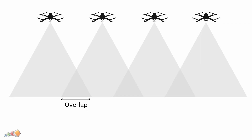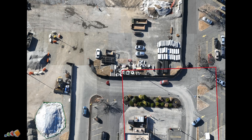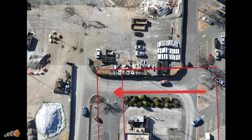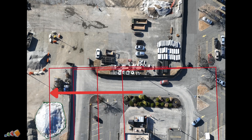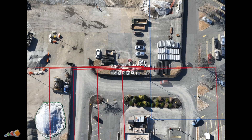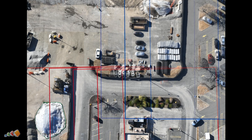First, what are overlaps? Overlaps refer to the percentage of overlap between consecutive photos your drone captures while mapping. There are two main types: front overlap, which is the overlap between photos taken along the flight path, and side overlap, which is the overlap between the flight lines. Depending on your need, overlaps are usually in the 75 to 85% range.